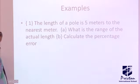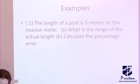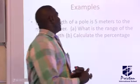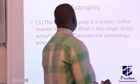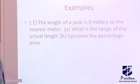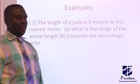Now, we have this example. The length of a pole is 5 meters to the nearest meter. (a) What is the range of the actual length? (b) Calculate the percentage error.